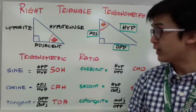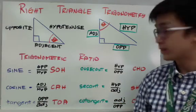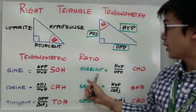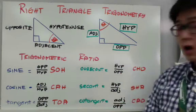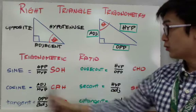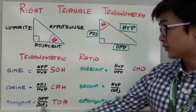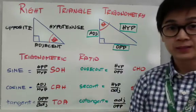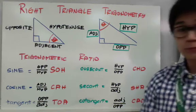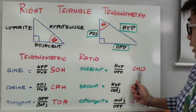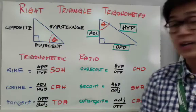Sine, cosine, and tangent each have their inverses. The inverses are cosecant, secant, and cotangent. Cosecant is the inverse of sine, so its value is the reciprocal: hypotenuse over opposite. The inverse of cosine is secant, giving us hypotenuse over adjacent. And cotangent, the inverse of tangent, is adjacent over opposite. We also have a mnemonic device for these: CHO-SHA-CAL — cosecant is hypotenuse over opposite, secant is hypotenuse over adjacent, and cotangent is adjacent over opposite.